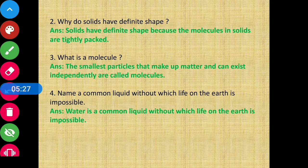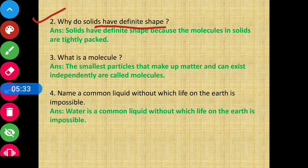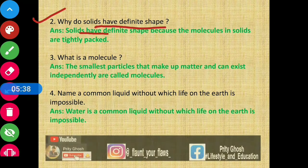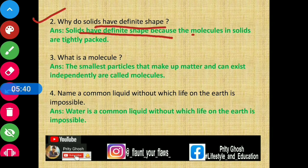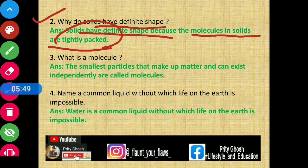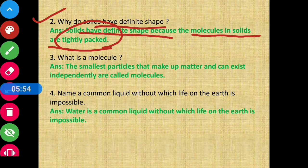Question number 2 - why do solids have definite shape? Solids have definite shape because the molecules in solids are tightly packed. Solids के जो molecules होते हैं वो बहुत ही tightly packed होते हैं, इसलिए उनका एक fixed या definite shape होता है।